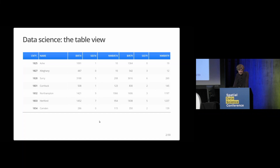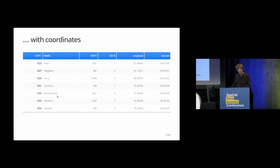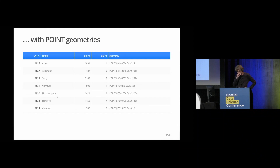So what is data science? Data science works with a lot of tables. Tables may come in all kinds of forms and have records and fields — rows and columns. At some stage they may come with coordinates: a column called longitude and latitude with values, and then you ask, what am I going to do with these values?